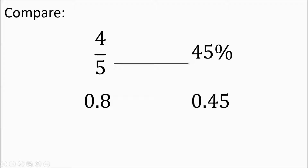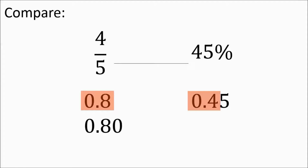Some kids might say 45 is bigger because the number 45 is bigger than 8, but that's not how to think about it. Look at the tenths places: eight-tenths is bigger than four-tenths. Another way to think about it is 80 cents is larger than 45 cents. Either way, you'll put in a greater-than sign — four-fifths is greater than 45 percent.